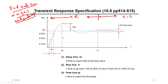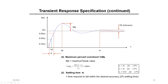The five specifications are: delay time — the time to reach half of the final value; rise time — the time to go from 0% to 100%, or from 10% to 90%; peak time — the time it takes to reach the first peak; maximum percent overshoot — how much the response overshoots with respect to the steady state value; and settling time — the time it takes to reach and stay within 2% of the final value. The two most important are settling time and overshoot.